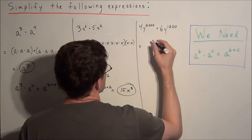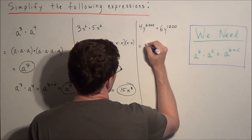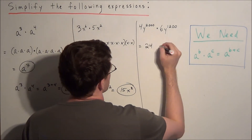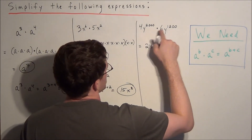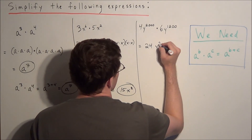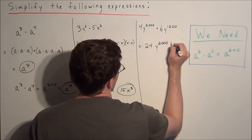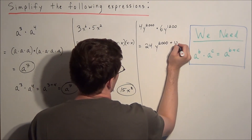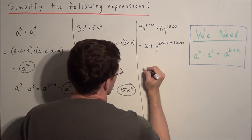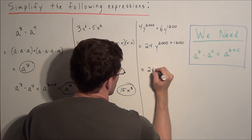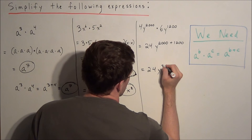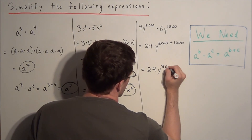First, 4 times 6 is 24, and y to the 2,000 times y to the 1,200 equals y to the 2,000 plus 1,200. This simplifies to 24y to the 3,200th power, which is our final answer for the third example.